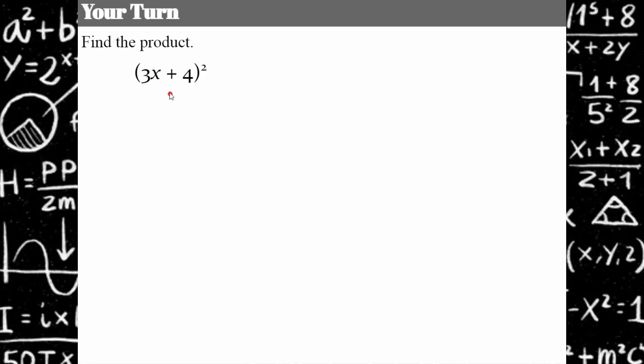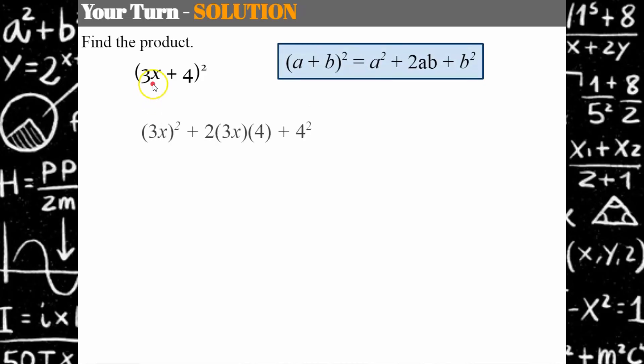Welcome back. Let's see how you did. So the first thing we're going to do is, there's our square of a binomial pattern. We're going to square the A term. We're going to multiply both terms by 2, and we're going to square the B term. So 3X squared is 9X squared. 2 times 3 times 4 is 24X. And 4 squared is 16. There is our product in standard form.